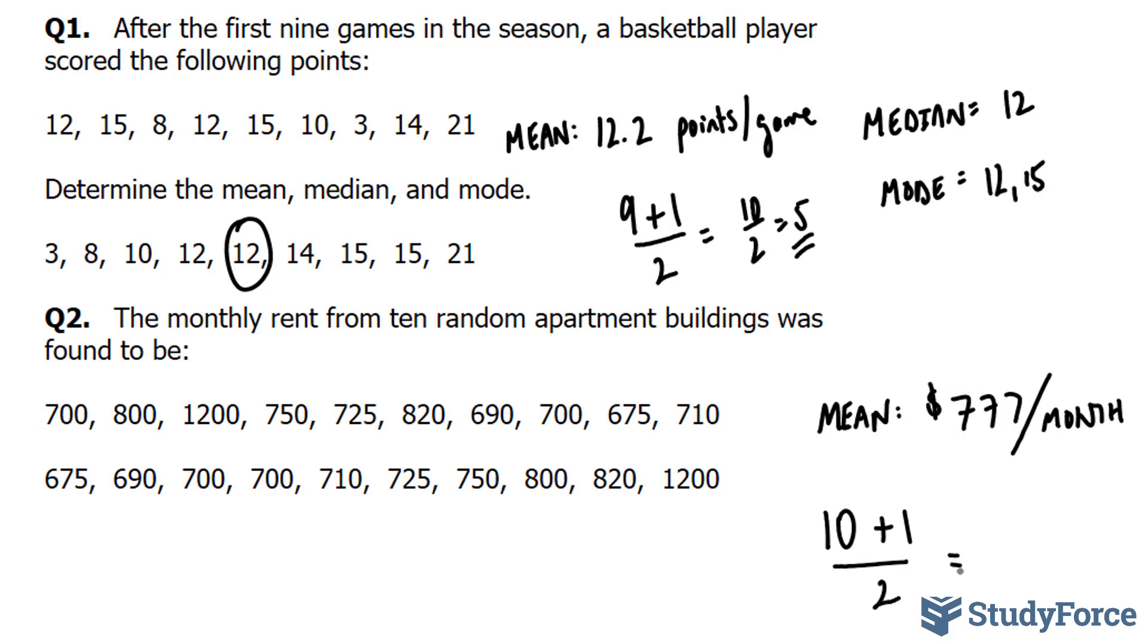If you do this, you end up with 11 over 2, which is 5.5. This means that your middle number will be between 5 and 6.